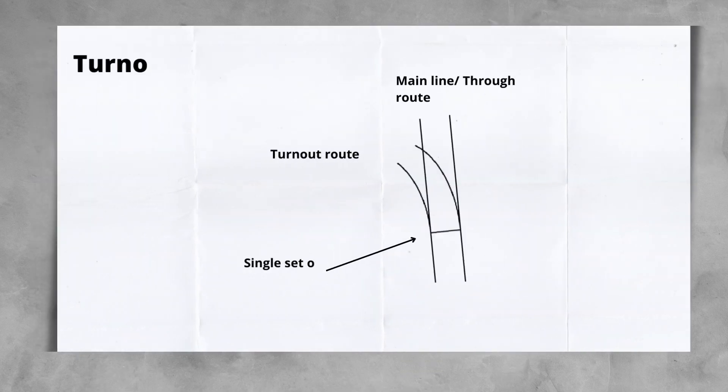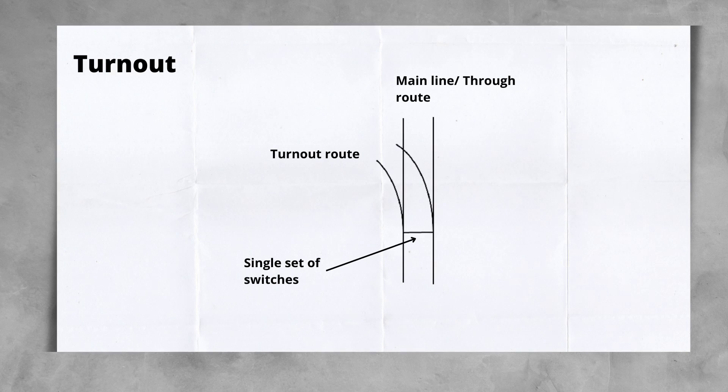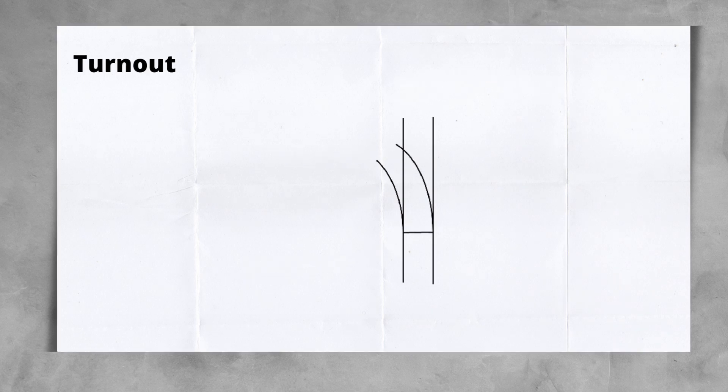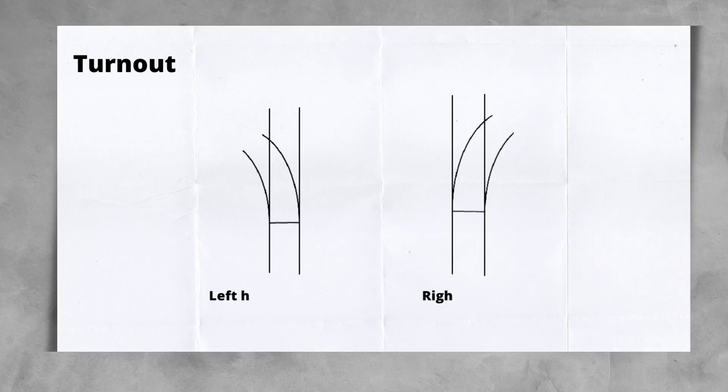A single set of switches is often called a turnout, likely from the fact that the route is turning out and away from the main line. A standard turnout is one where the main line, or the through route, is straight while the turnout curves away. A turnout is handed in the direction it moves away from the main line: a left-hand turnout moves away to the left, a right-hand to the right.